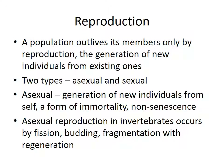Asexual reproduction is the easiest kind. It is the generation of new individuals from your own self, so it's actually a form of immortality and non-senescence, where you never really get old because there's always a part of you somewhere else. You divide into two, each of those divides into two, and so on — the original one that started it all is actually one of the same, so you never really die.